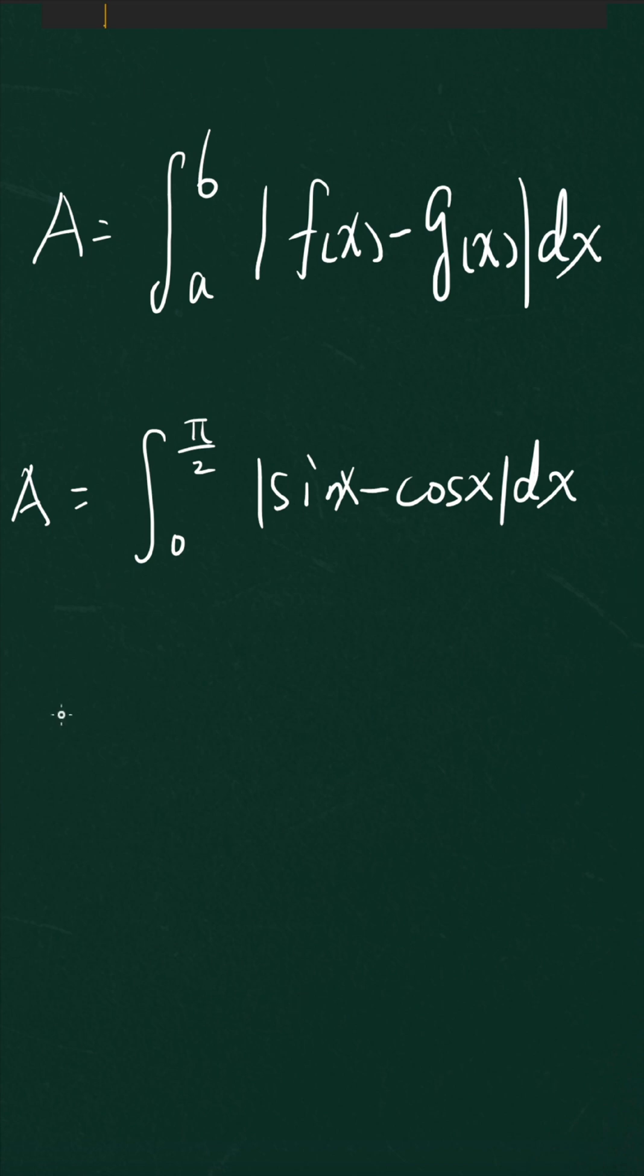You'll find out actually this is going to be equal to the integral of zero to pi over 4 of cosine x minus sine x plus the integral from pi over 4 to pi over 2 of sine x minus cosine x.